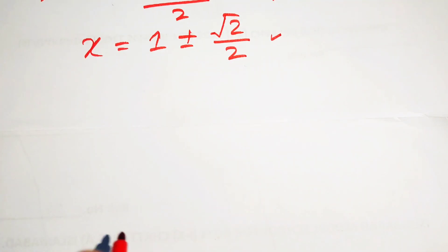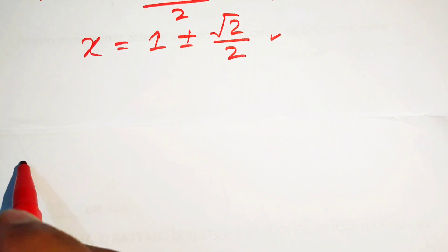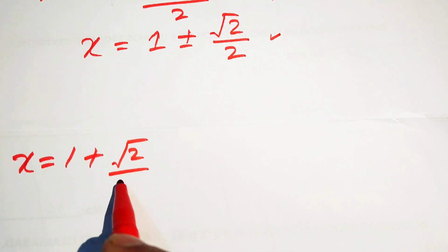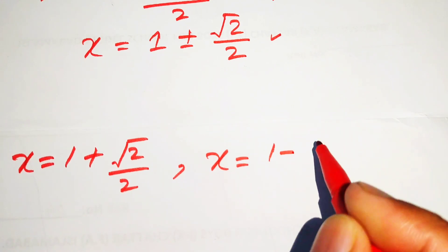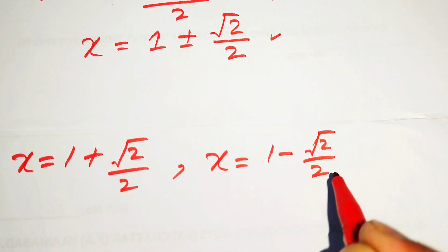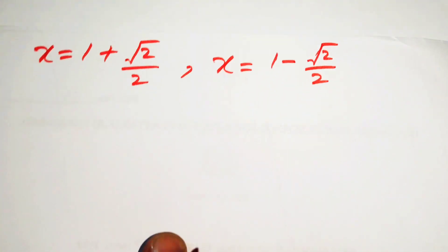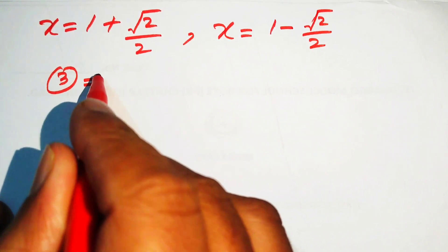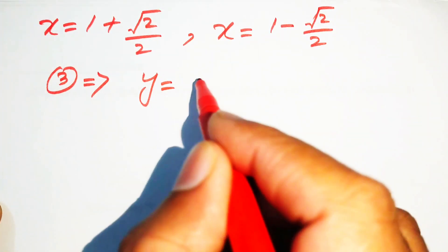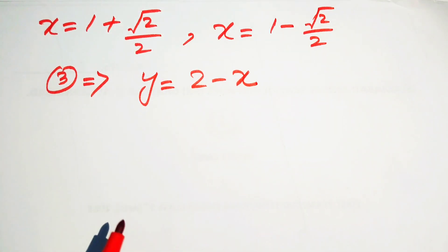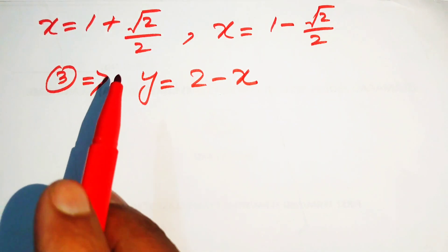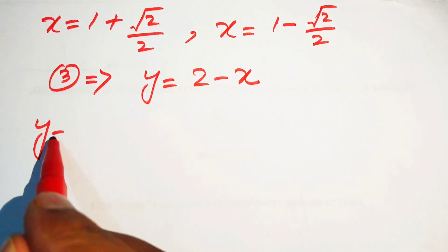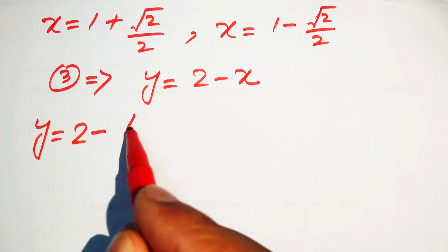Now we find the corresponding values of y. The two values of x are: x equals 1 plus square root of 2 divided by 2, and x equals 1 minus square root of 2 divided by 2. Using equation number 3, y equals 2 minus x, we substitute both values of x.